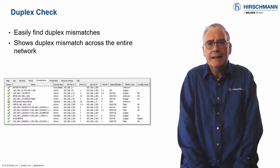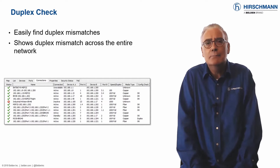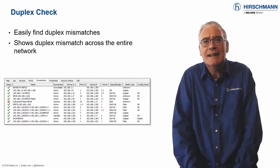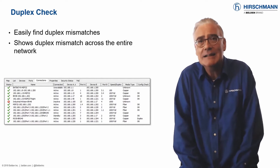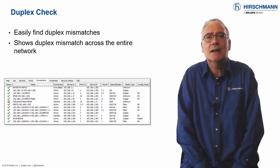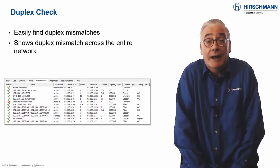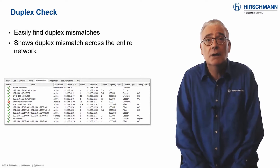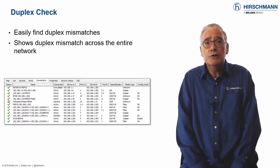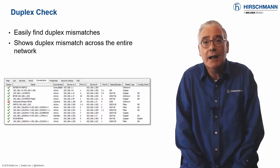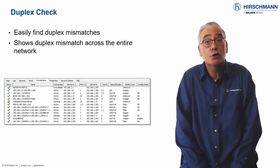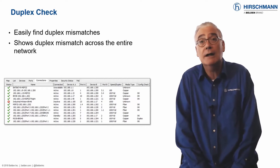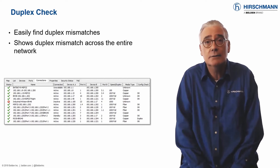Finding duplex mismatches is a painstaking and tedious task prone to errors. The duplex check in Industrial HiVision highlights configuration failures across your network at a glance.